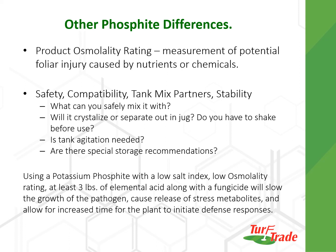We know that if you are using a potassium phosphite with a low salt index, low osmolality rating, and at least three pounds of elemental acid along with your fungicide, you are going to be able to slow the growth of the pathogen. You are also going to help the turf release stress metabolites and allow for increased time for the plant to initiate its own defense responses. If you choose a phosphite that has other things added to it — silicon, amino acids, water management amino acids — you are going to better help the turf to protect, defend, and survive throughout even extreme environmental conditions.